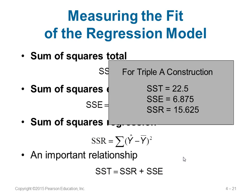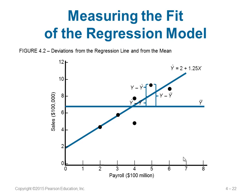Here are the calculated values given for Triple A Construction. In the scatter diagram, the ȳ line is the mean value of y, and the prediction line is ŷ = 2 + 1.25x. The actual value of y and the predicted value on the line differ — y minus ŷ is the SSE component, ŷ minus ȳ is the SSR component, and y minus ȳ is the total SST. So y − ȳ equals (y − ŷ) + (ŷ − ȳ).